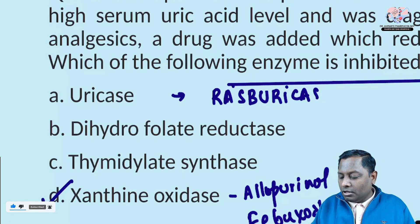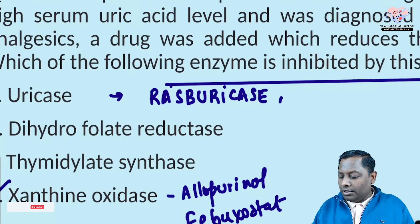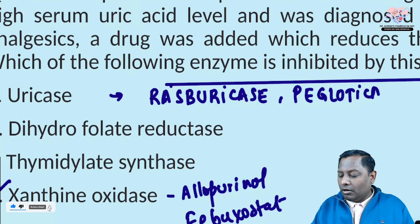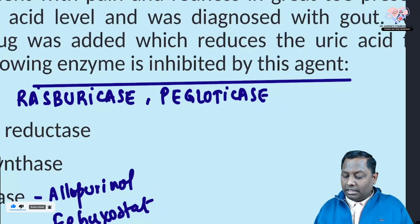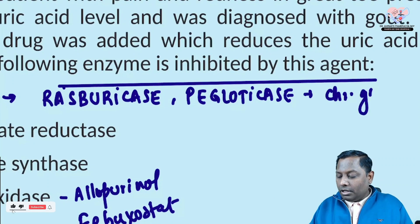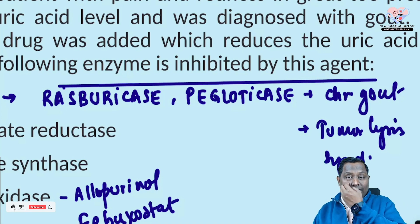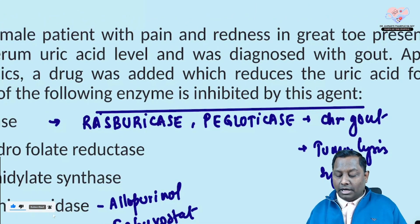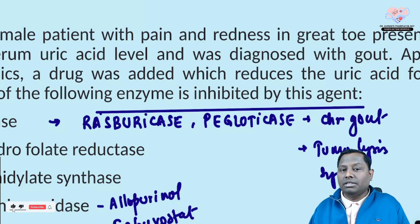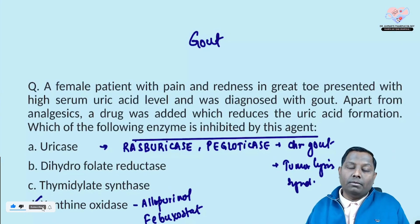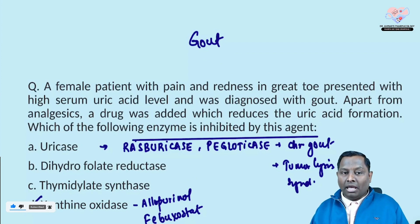Recombinant uricases include rasburicase and pegloticase. They are utilized in chronic gout and also in patients with tumor lysis syndrome because of their fast action. They cause metabolism of uric acid to the water-soluble metabolite allantoin. Among the given choices, xanthine oxidase inhibitor — allopurinol or febuxostat — is the correct answer.